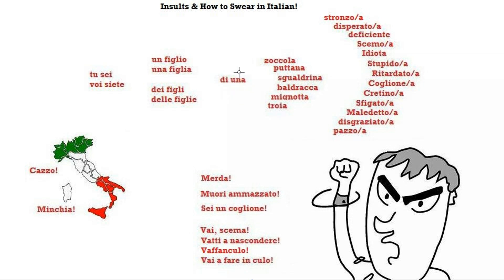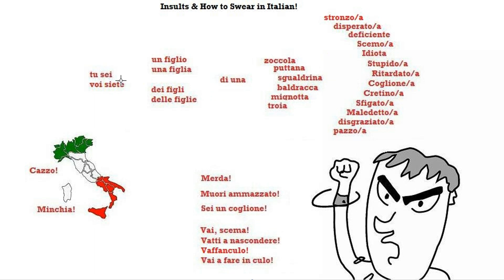Remember the indefinite article — we've covered these in another video. In a nutshell, 'un' is masculine and 'una' is feminine. So 'tu sei un idiota' is how you say 'you're an idiot' to a man, and 'tu sei una stupida' translates as 'you're stupid' said to a woman.